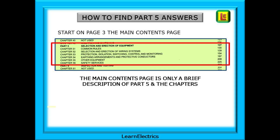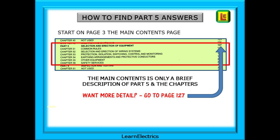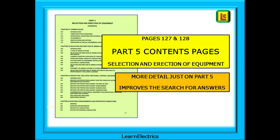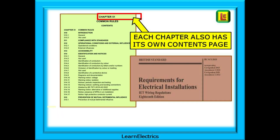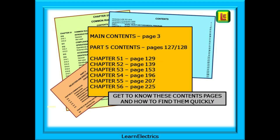So how do we find answers to Part 5 questions? Go to page 3, the main contents page — this is the go-to starting page. Everything starts from here. On page 3 we can see Part 5, selection and erection of equipment. Notice the main contents page is only a very brief description. For more detail, go to page 127, where you will find contents pages specific to Part 5 on pages 127 and 128. These give a lot more detail and will improve your search for answers. Each chapter also has its own contents page with even more information. You must get to know these contents pages and be able to find them quickly.